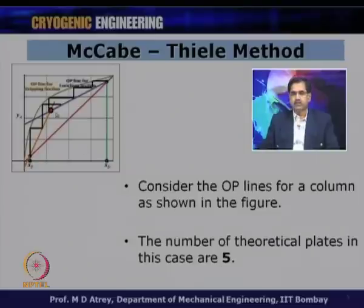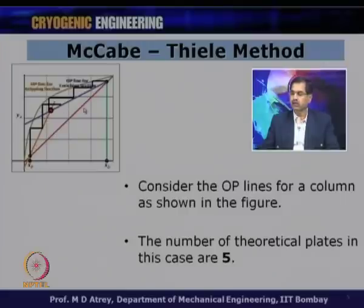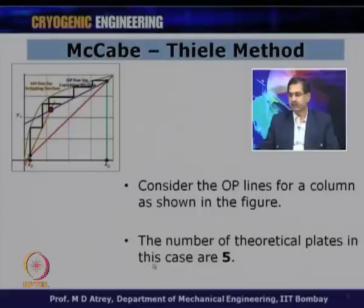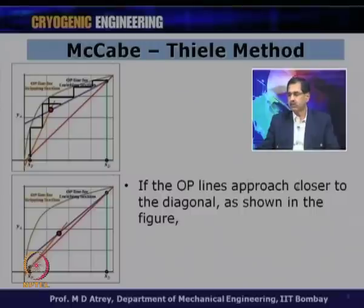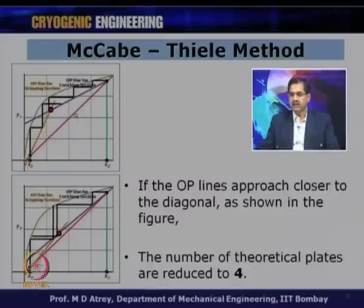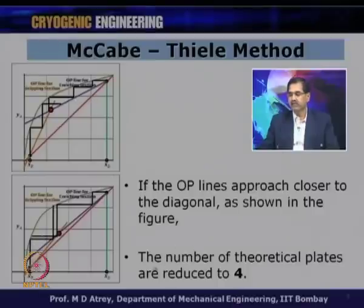Consider the operating lines for a column as shown — this represents a column when we want to use the McCabe-Thiele methodology. You can see that the number of theoretical plates in this case are 5: vertical lines 1, 2, 3 in the enriching section and 1 and 2 in the stripping section. If I draw the operating line closer to the y equals x diagonal line, the number of plates reduces — in that case we get only 4.